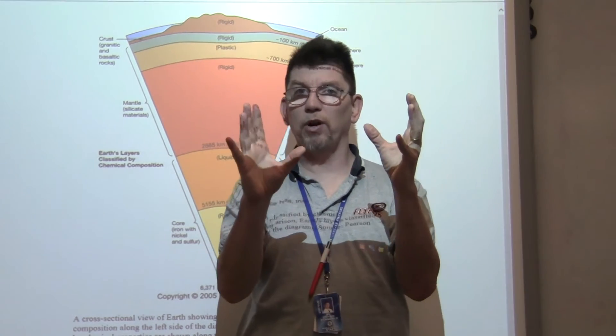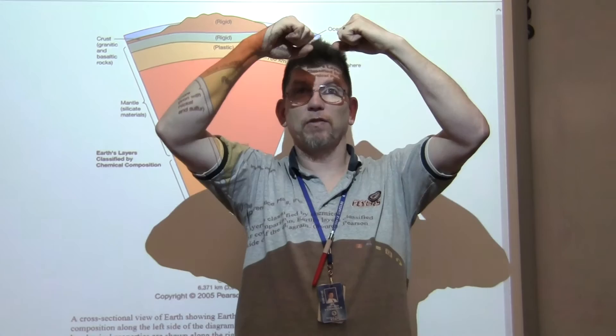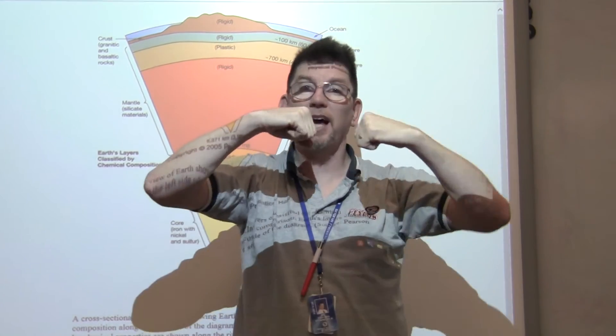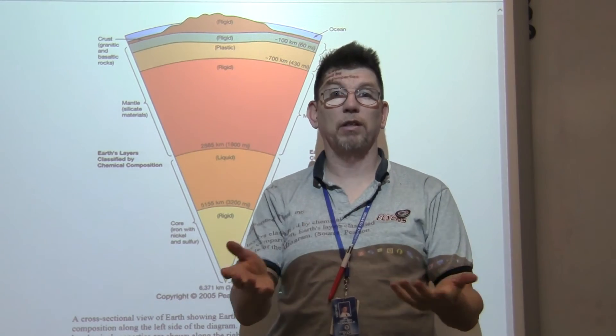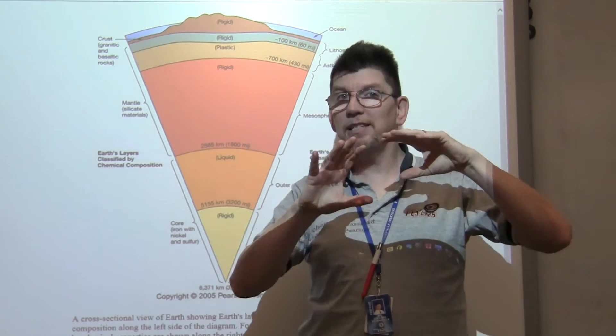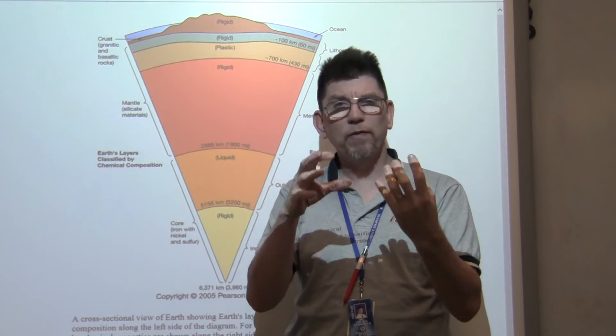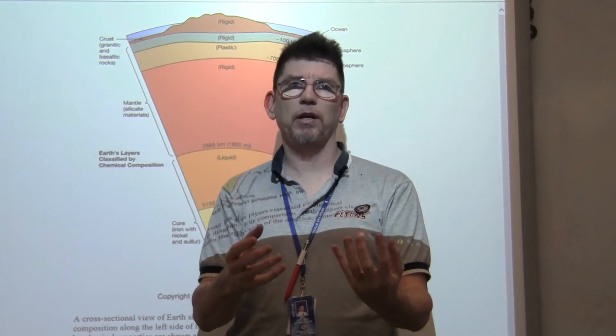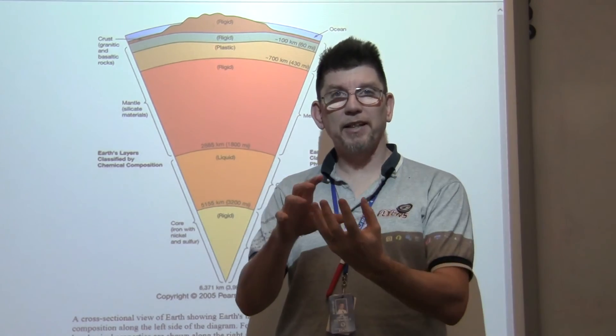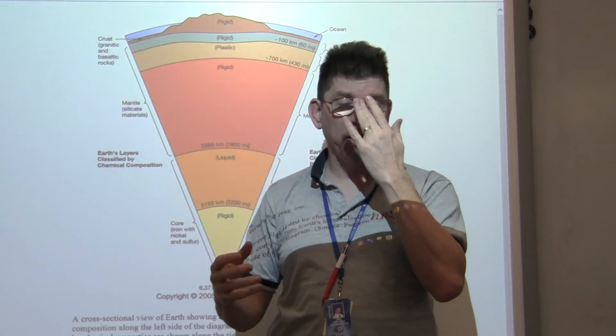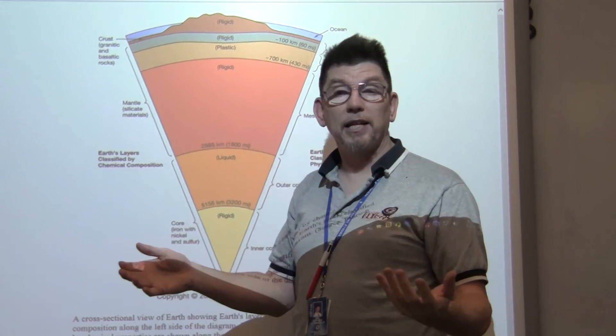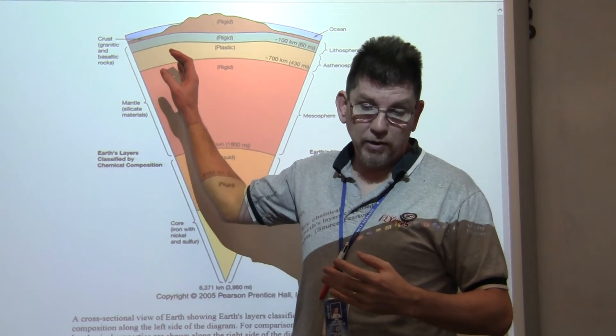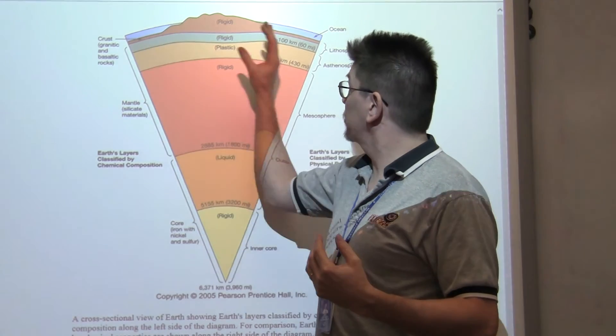These convection currents are extremely important because these convection currents are responsible for pulling plates apart, pushing them together or sliding them side by side, causing volcanoes, earthquakes on the surface of the earth. This is really where we get down to what are the mechanics. The asthenosphere is an extremely important part of the earth and understanding that helps us understand what's going on with earthquakes, volcanoes, and plate tectonics. This plastic area is very important. It comes through and it moves the plates around.